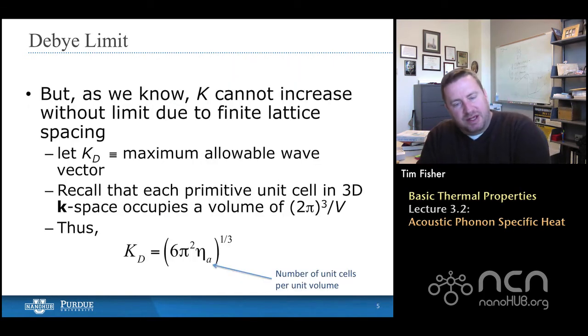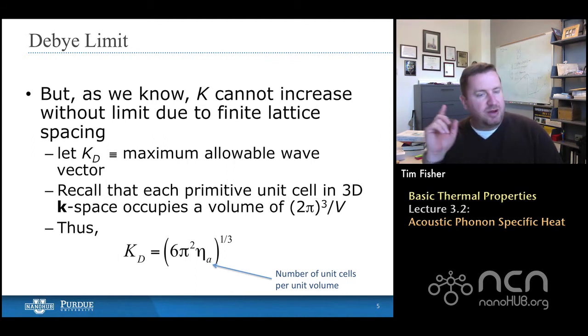Now, as we implement this Debye model, what we'd like to do is substitute the Debye dispersion model into the expression for specific heat that we started with. And one of the factors that's very important, and we talked about earlier in the course, is that the wave vector cannot increase indefinitely because we have finite lattice spacing. And so the k-space sort of repeats itself. In general, we have all the information we need about a lattice and the wave nature in the first Brillouin zone.